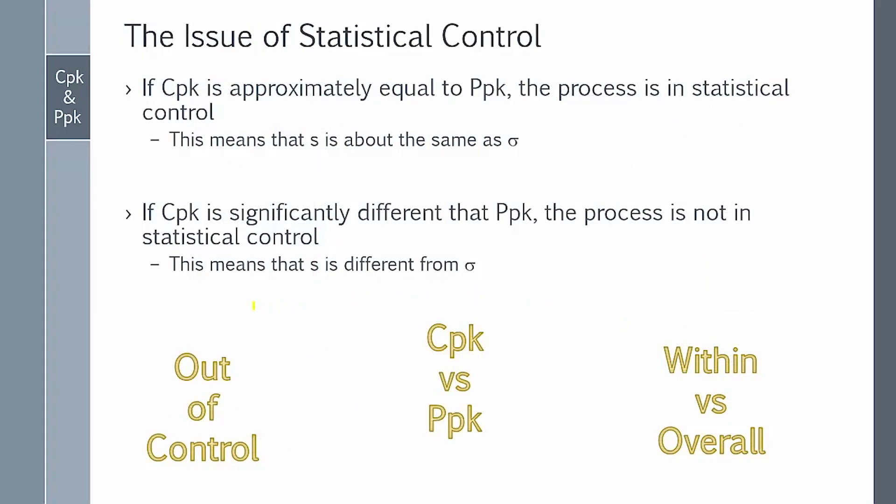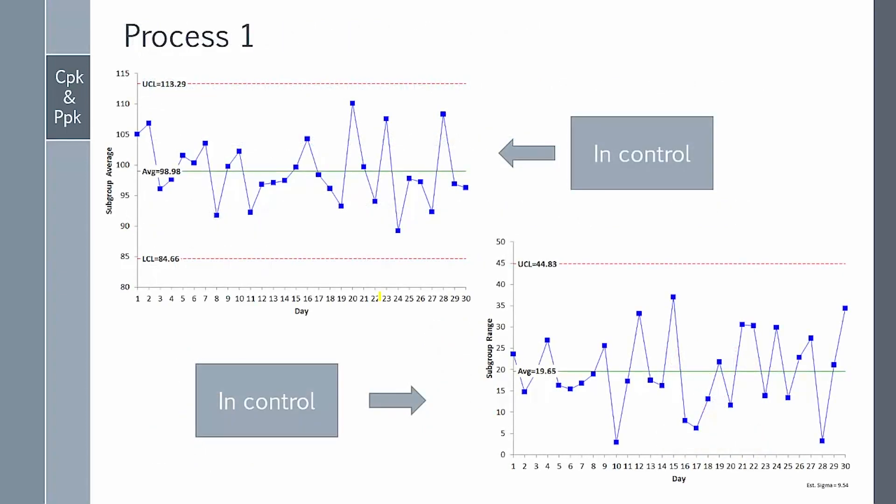So why do we have differences? The reason you have differences is simply statistical control. If CPK is approximately equal to PPK, then the process is in statistical control. And that means that calculated standard deviation S is about the same as the estimated standard deviation from a range control chart. If the CPK is significantly different than PPK, then your process is not in control and your calculated standard deviation will be significantly different than your estimated standard deviation from a range chart. Let's take a look at how this happens.